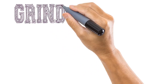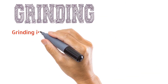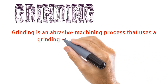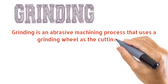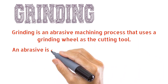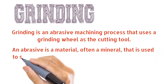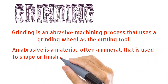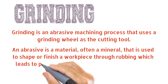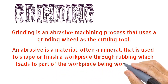Grinding is an abrasive machining process that uses a grinding wheel as the cutting tool. An abrasive is a material, often a mineral, that is used to shape or finish a work piece through rubbing, which leads to part of the work piece being worn away by friction.